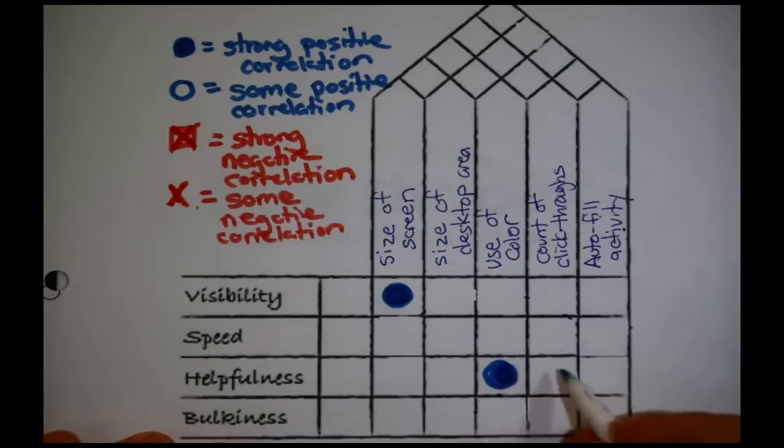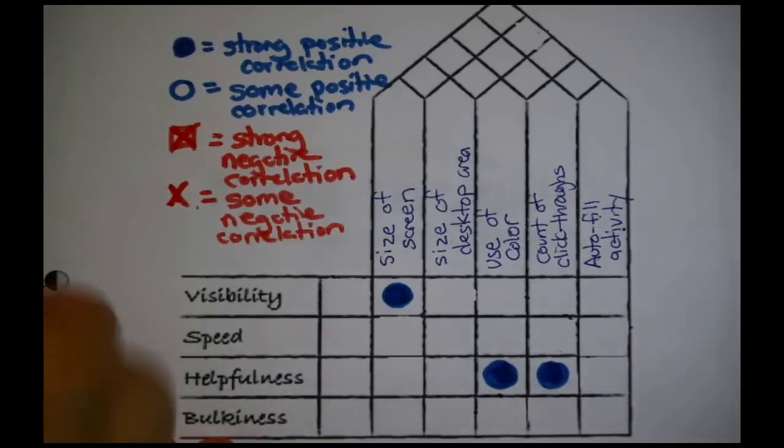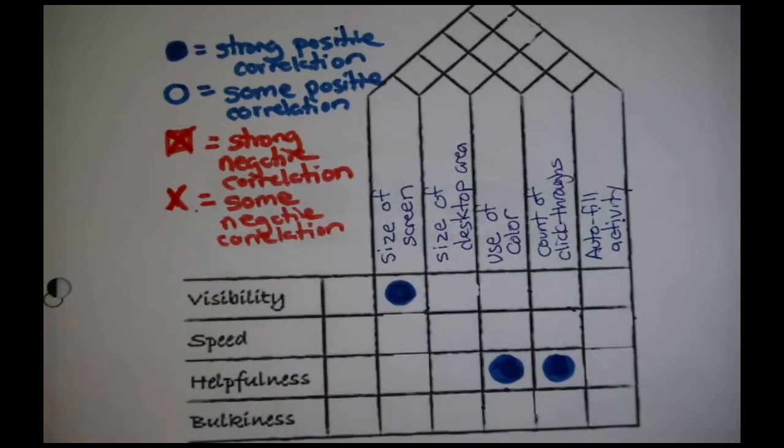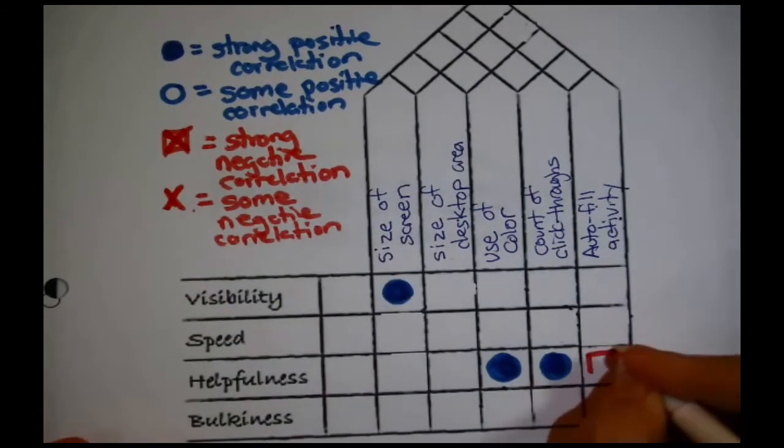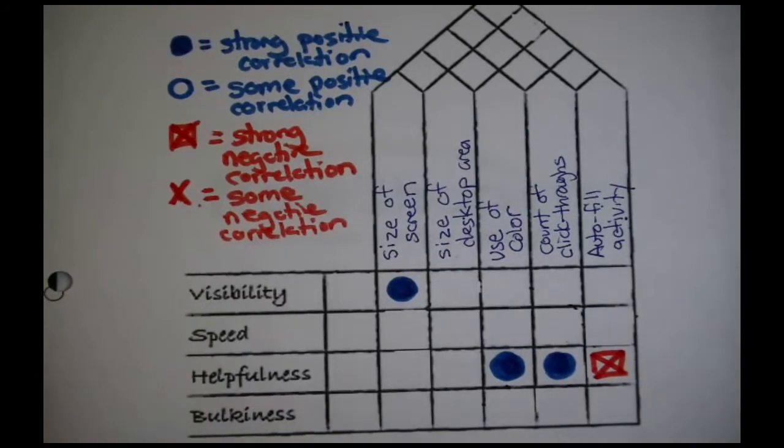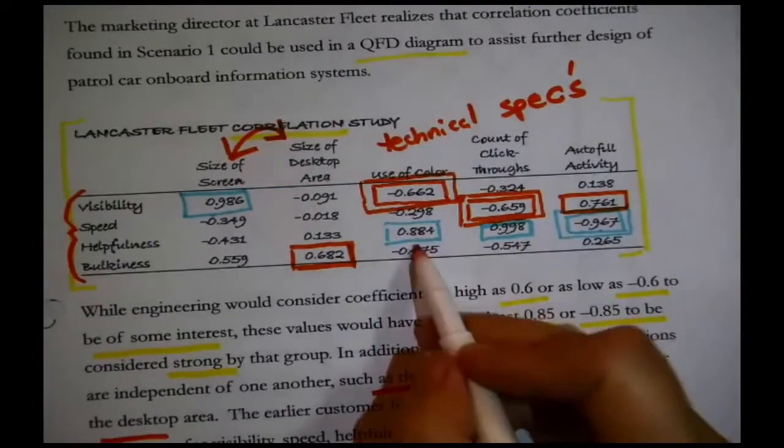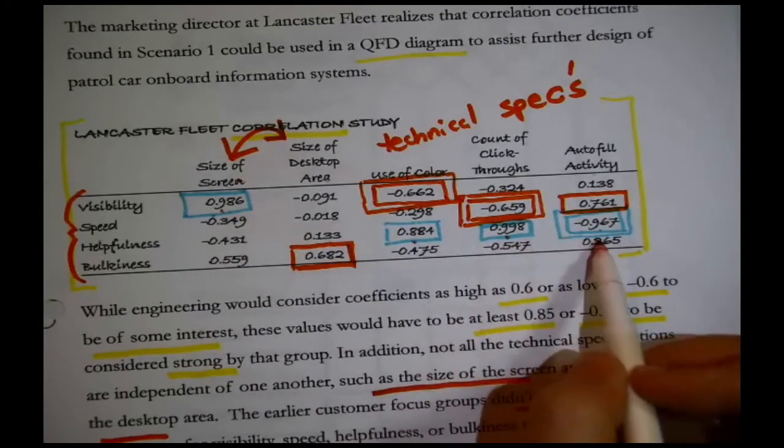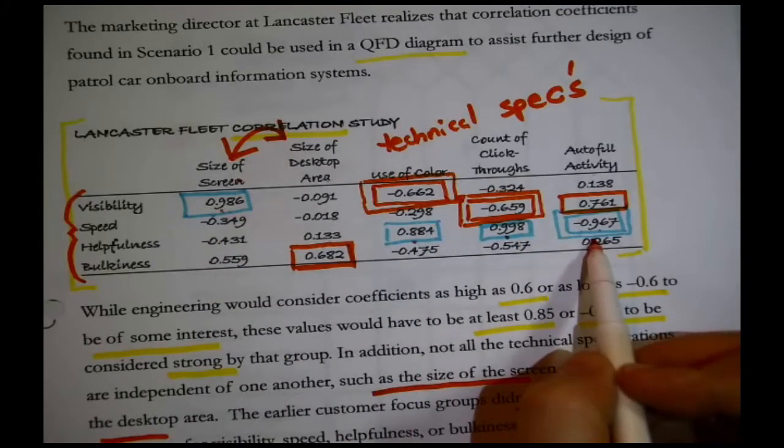Then, let's see, right next door to it, helpfulness and the count on the click-throughs, wow, 0.998. It doesn't get much stronger positive than that. Versus, helpfulness and autofill activity was negative 0.967. That is strong, but it's negative correlation. I put that symbol. Okay, now, what I'm doing as I'm making these symbols is I'm going back here. We did this one, this one, this one, and this one.